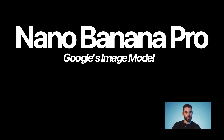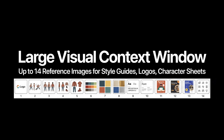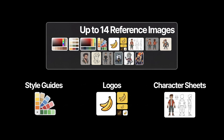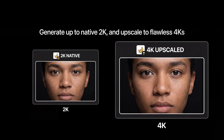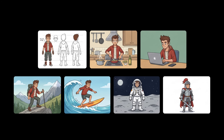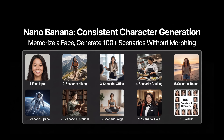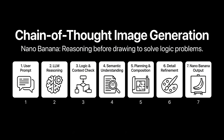Nano Banana Pro is Google's new image model — an image generator that excels at graphics, likeness, posters, and diagrams in multiple languages, with many other interesting use cases. It has a large visual context window that allows you to upload up to 14 reference images for styles, guides, logos, or character sheets, and you can generate images up to native 2K and upscale them to 4K. Here's an image of Nano Banana 1 on the left and Nano Banana 2 on the right — you can definitely tell the difference. It can memorize a face or character and generate that exact same person or likeness in 100+ different scenarios without their face morphing. It uses chain-of-thought processing to think before it generates.